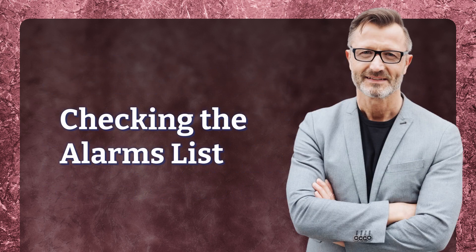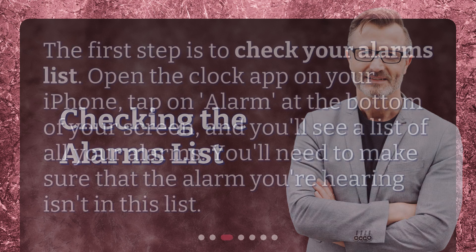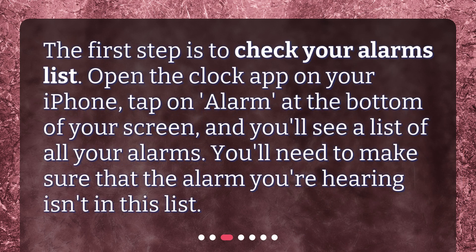Checking the alarms list. The first step is to check your alarms list. Open the clock app on your iPhone, tap on alarm at the bottom of your screen, and you'll see a list of all your alarms. You'll need to make sure that the alarm you're hearing isn't in this list.